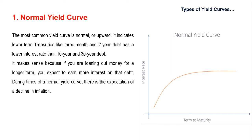The most common yield curve is the normal or upward sloping curve. As you can see in the graph, it indicates that lower treasuries like three-month and two-year debt have a lower interest rate than ten-year and thirty-year debt. This makes sense because if you are loaning out money for a longer term, you expect to earn more interest. During times of a normal yield curve, there is the expectation of a decline in inflation.